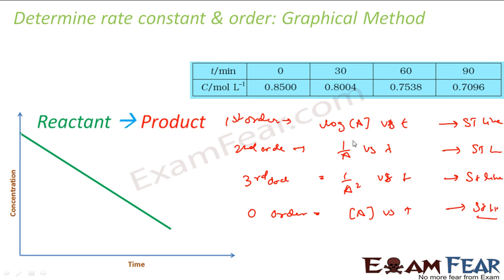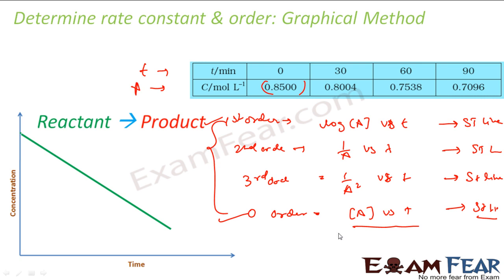Here, a is nothing but my concentration. We try to plot a graph between a and t — that is the most easiest form. If my graph is a straight line, it is a zero-order reaction. If it is not, then I try to plot a graph between log of this value and t. If it is a straight line, it is a first-order reaction. If not, I try to plot a graph between 1/a and t, and I keep doing it until I get a straight line. So we draw different kinds of graphs, and whichever graph comes out straight tells us the order: a vs t → zero-order, log a vs t → first-order, 1/a vs t → second-order, 1/a² vs t → third-order. Once I know the order, I can easily find the value of k.